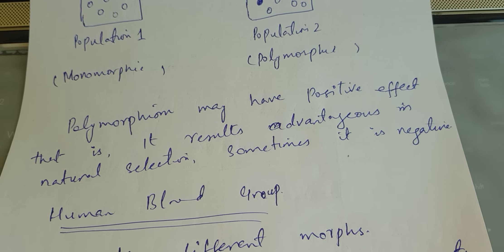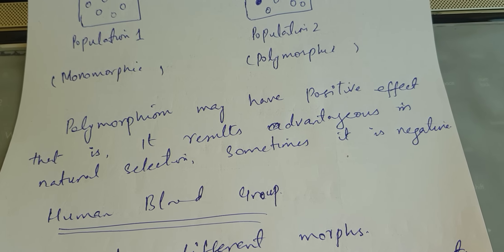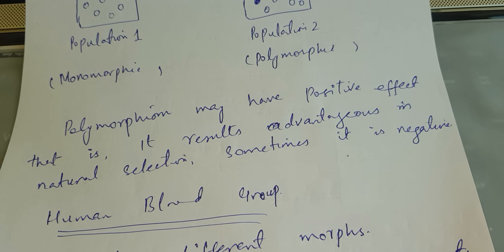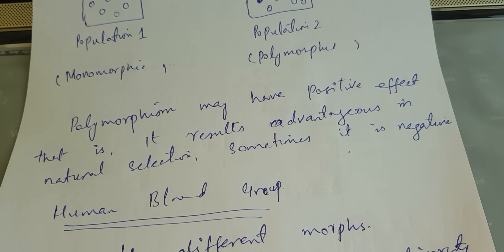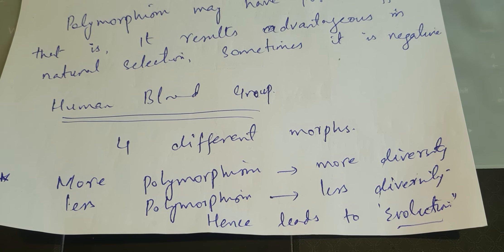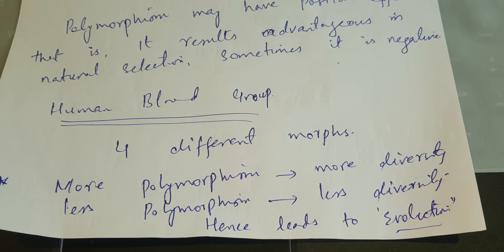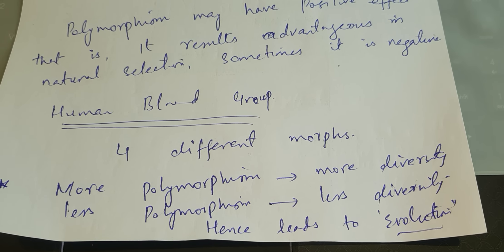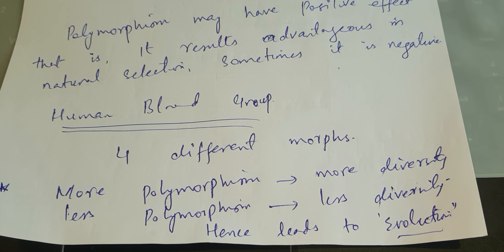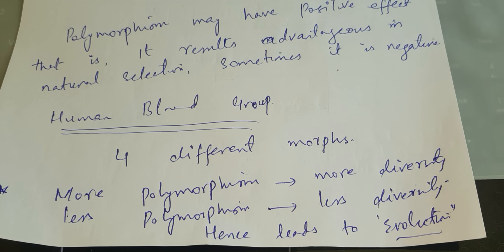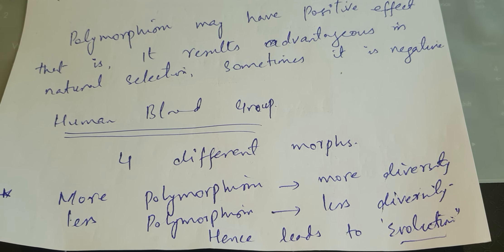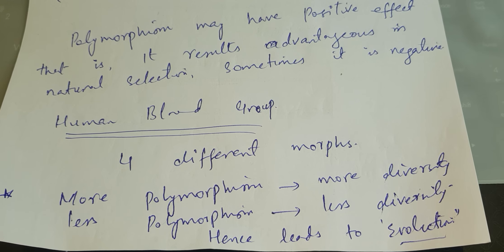Sometimes polymorphism helps in natural selection; sometimes it may prove lethal. Examples include human blood group types. There are four different forms of human blood group types, which gives diversity of blood phenotype. More polymorphism means more diversity, and less polymorphism means less diversity.